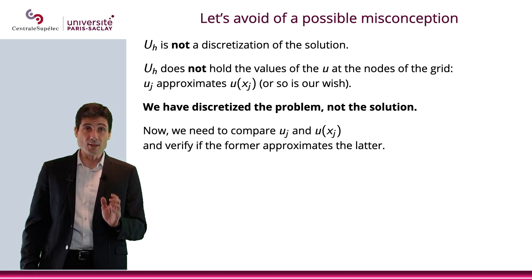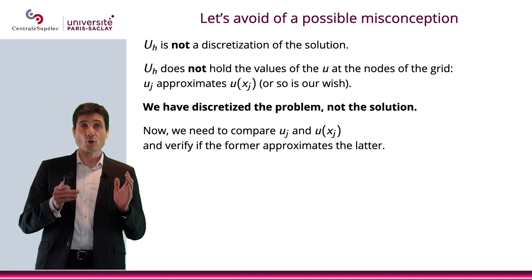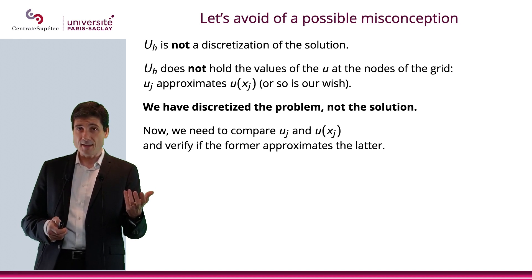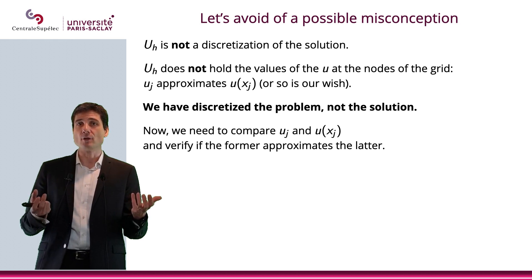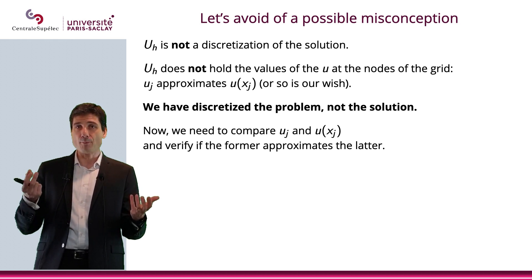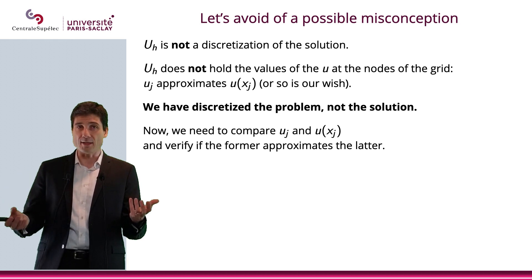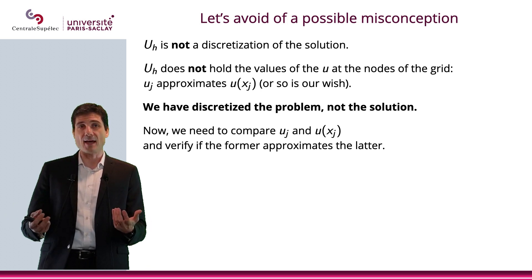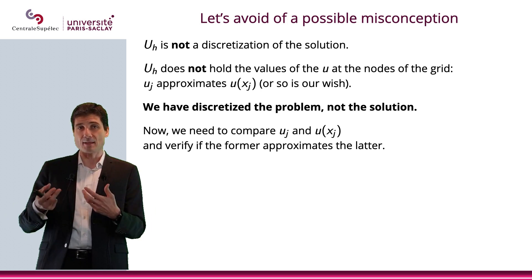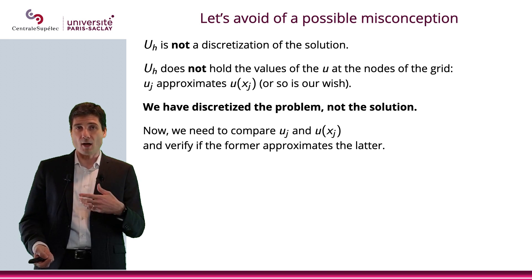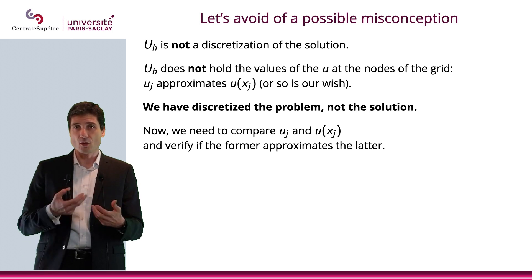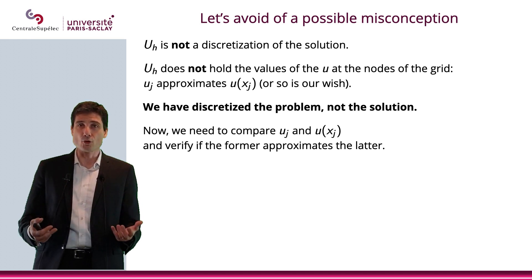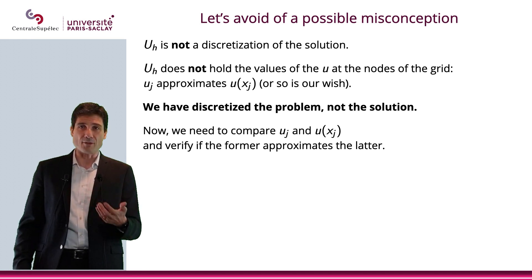So what we'll need to do is compare that approximation u_j and the actual value of u at point x_j of the grid, and verify that one approximates the other. Of course, by 'approximate', we need to be precise and we'll need to see if we have convergence — basically everything we usually do when we have a numerical method.